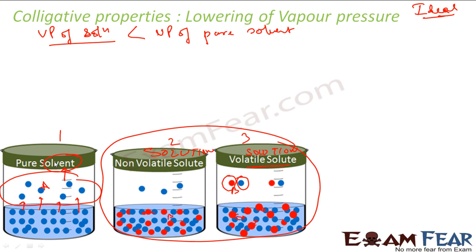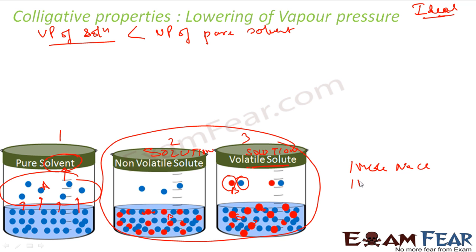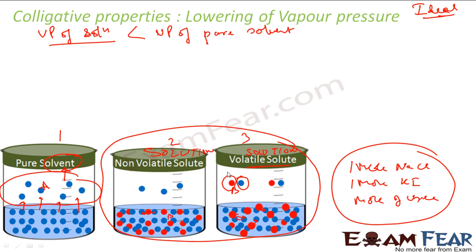Raoult established this relation: the lowering of vapor pressure depends only on the concentration of solute particles and is independent of their identity. For example, in 1 kg of water, if you add 1 mol of NaCl, or 1 mol of potassium iodide, or 1 mol of urea — in all these cases the relative lowering of vapor pressure will be the same.